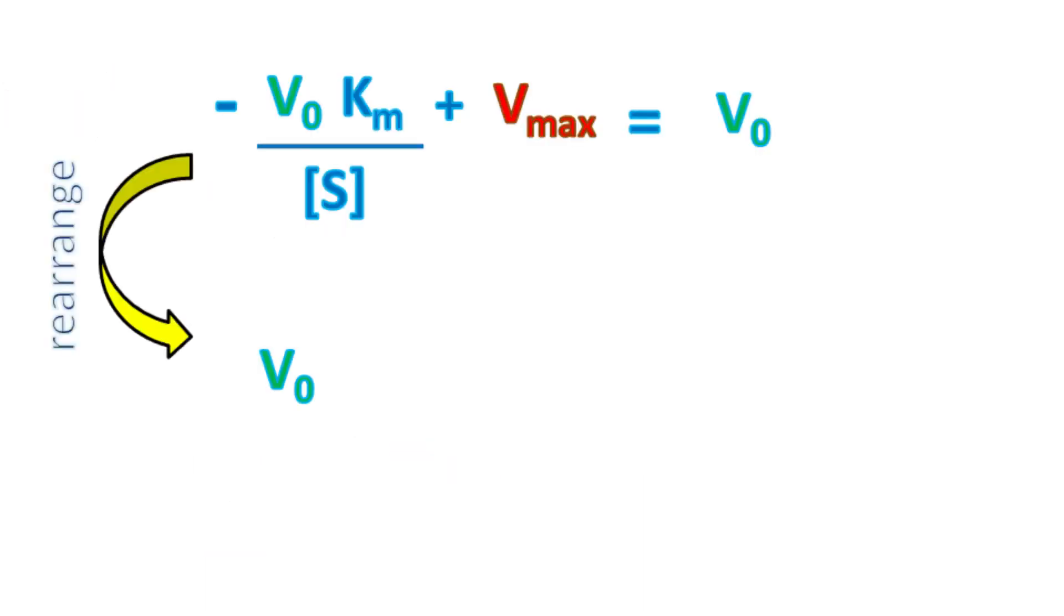Or, V0 equals minus V0 into Km upon S plus Vmax.